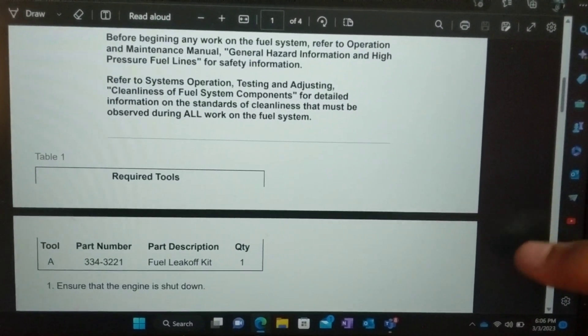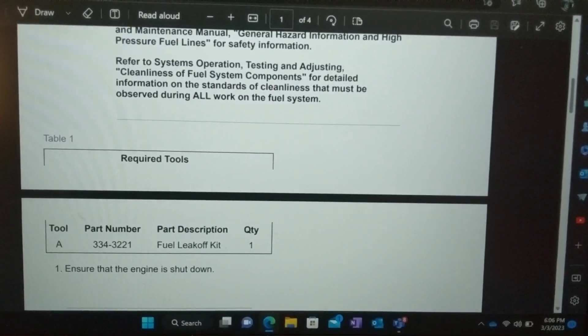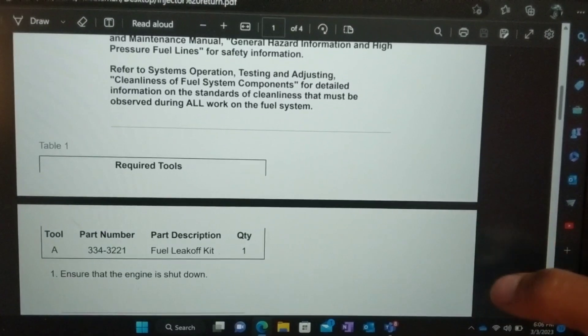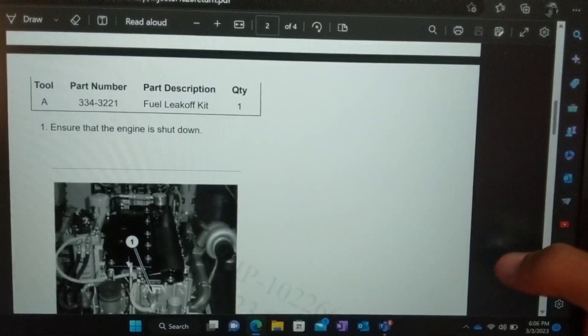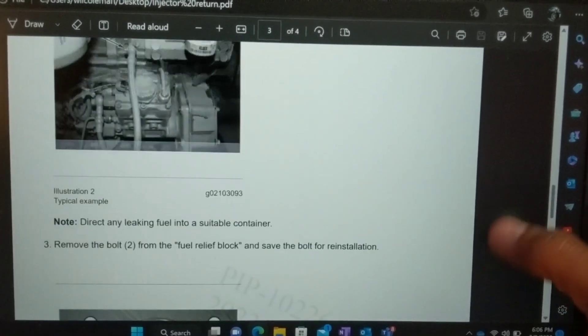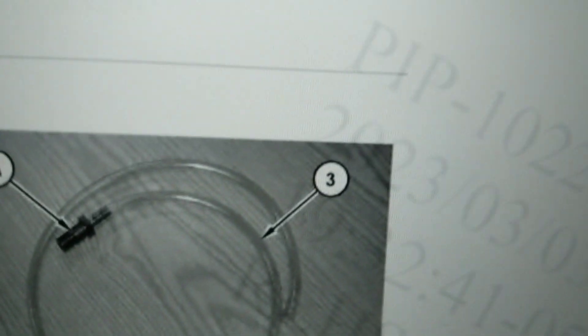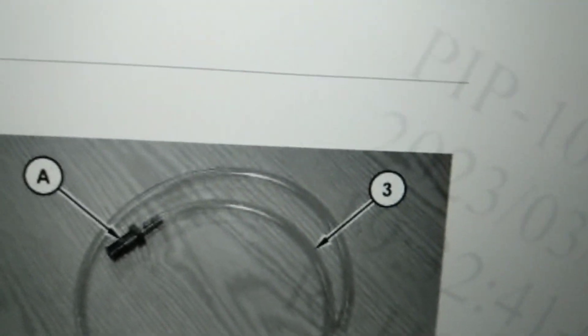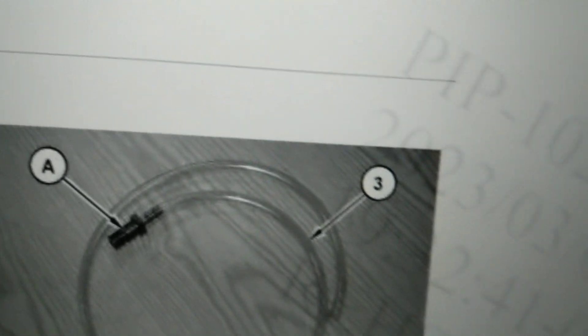If you happen to want the test kit, the part number is 334-32-21. And I'll show it to you real quick and I'll come back. It's nothing more than just a banjo bolt with a barb fitting on the end of it.